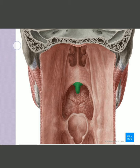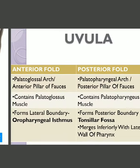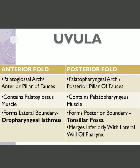The uvula is highlighted in green in this figure — it is a conical projection hanging from the middle part of the inferior border of the soft palate. On both sides, folds of mucous membrane descend downwards. The anterior fold is known as the palatoglossal arch, also called the anterior pillar of fossa, and the posterior fold is known as the palatopharyngeal arch, or the posterior pillar of fossa. The palatoglossal arch contains the palatoglossal muscle and the palatopharyngeal arch contains the palatopharyngeal muscle. The anterior fold also forms the lateral boundary of the oropharyngeal isthmus.